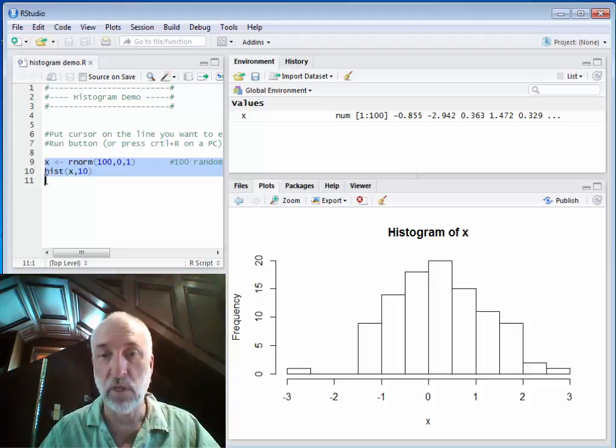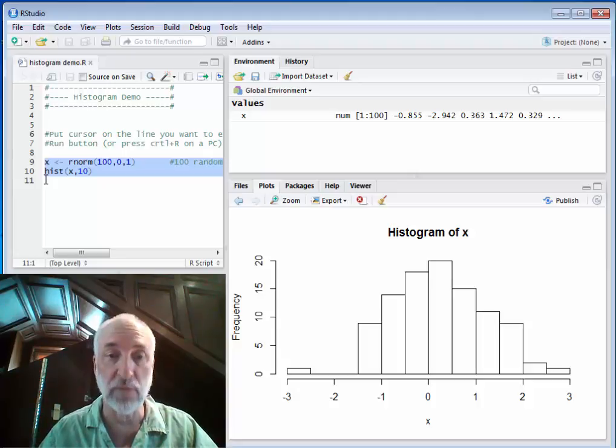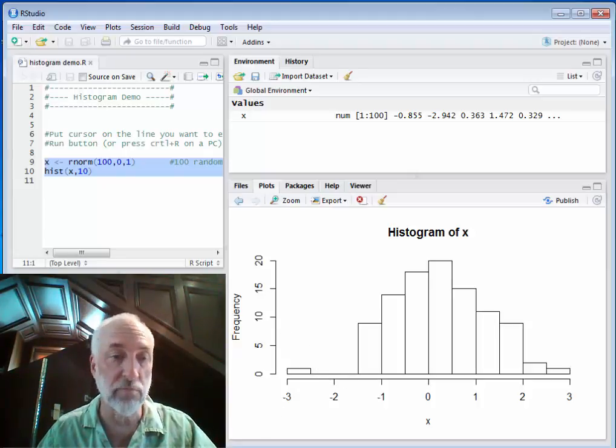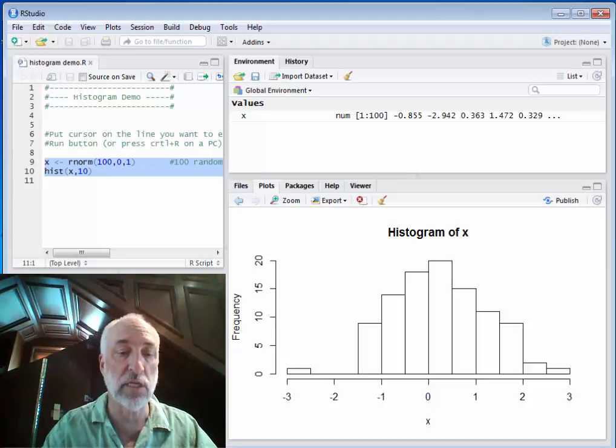Now, look at this histogram. What do you think? It looks pretty symmetric and reasonably shaped. Of course, we see a couple of bins over here that have no data in it whatsoever. That kind of thing happens. Let's run it again.